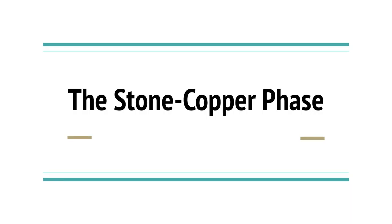Welcome to 'To The Point.' In this session we'll be discussing the Stone-Copper phase. The transition from the Stone Age to the Metal Age was a gradual process — metallic implements and stone implements were used parallelly. There was no uniformity regarding the use of metals in different parts of India. In north India the New Stone Age was succeeded by the Copper Age, whereas in south India the New Stone Age was replaced by the Iron Age. The Metal Age is classified as the Copper Age, Bronze Age, and the Iron Age.